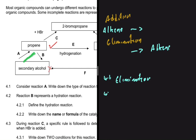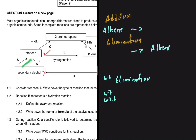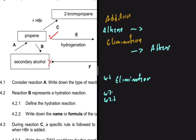For 4.2 and 4.2.1, reaction B represents a hydration reaction. Looking at B, we start with propene and end up with a secondary alcohol. We are told that is a hydration reaction. The definition of a hydration reaction is: the addition of water to a compound.